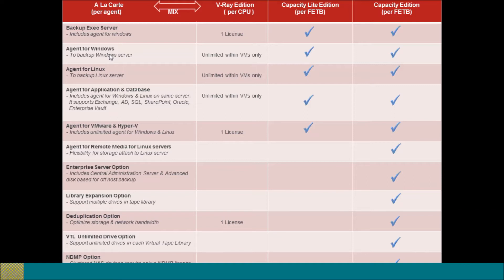Agent for Application and Database supports backup of applications such as Active Directory, Exchange, Enterprise Vault, SharePoint, and databases like Oracle and SQL Server. So if a system has Exchange on it and you want to back up Exchange, you need to have this license. The next one is Agent for VMware and Hyper-V Host, required for servers hosting VMware and Hyper-V — it covers all VM backups running within that host. However, if any VM is an Exchange or Active Directory server, Agent for Application and Database needs to be deployed separately.